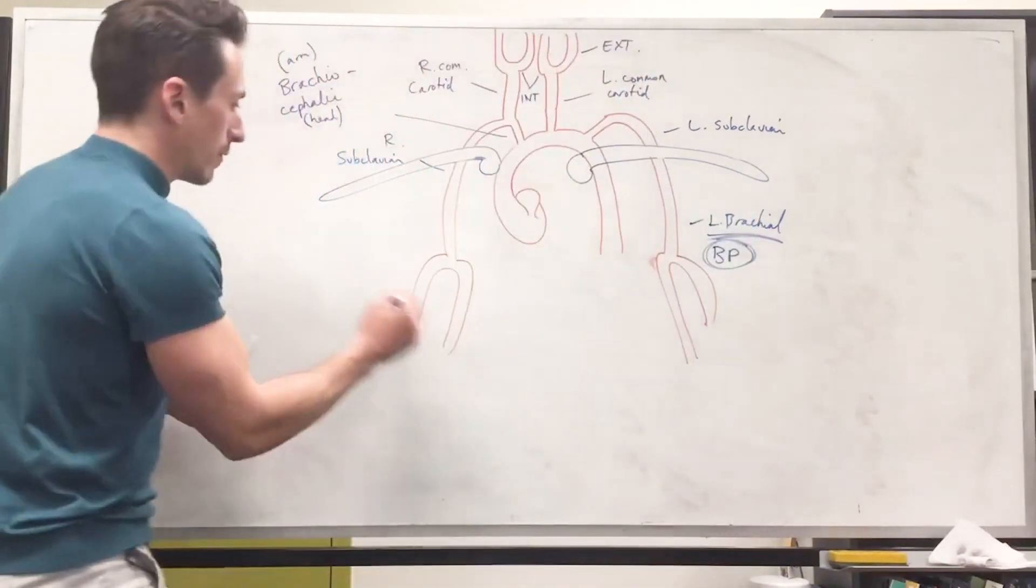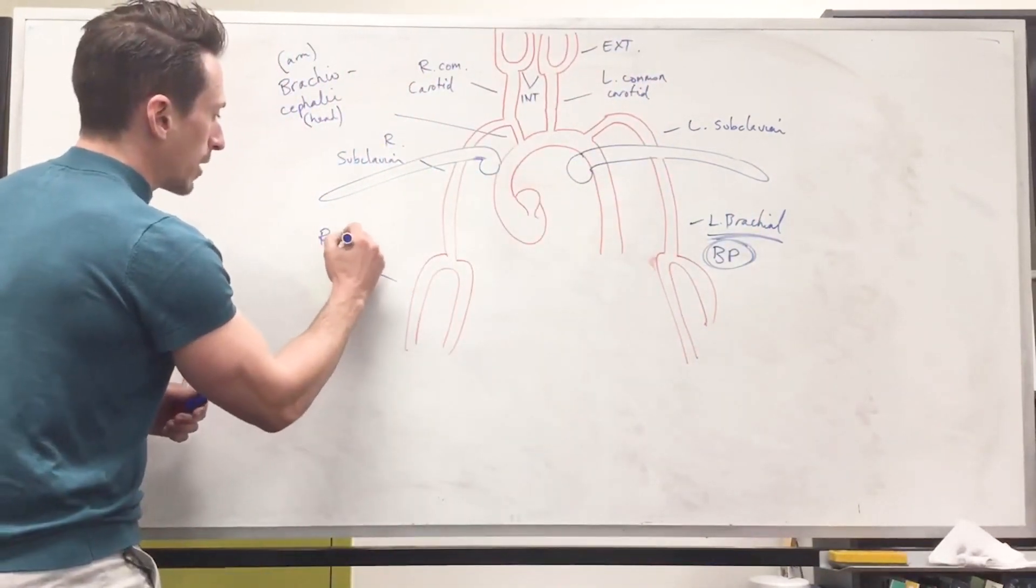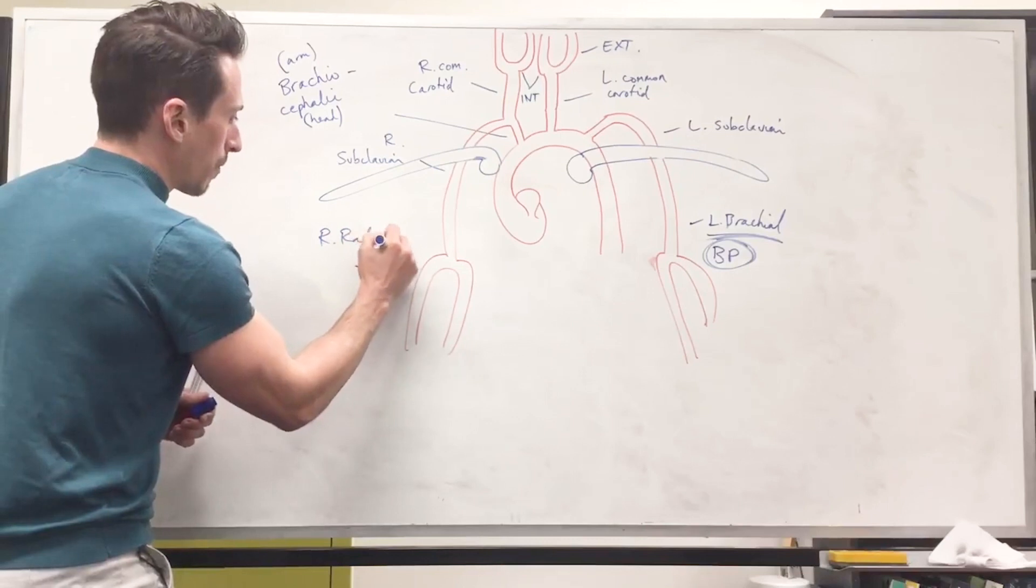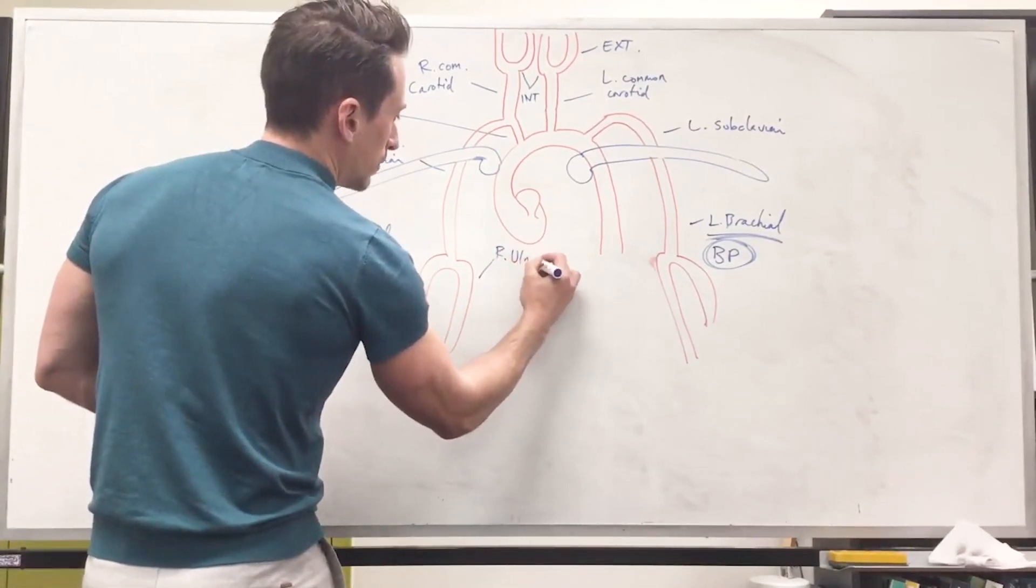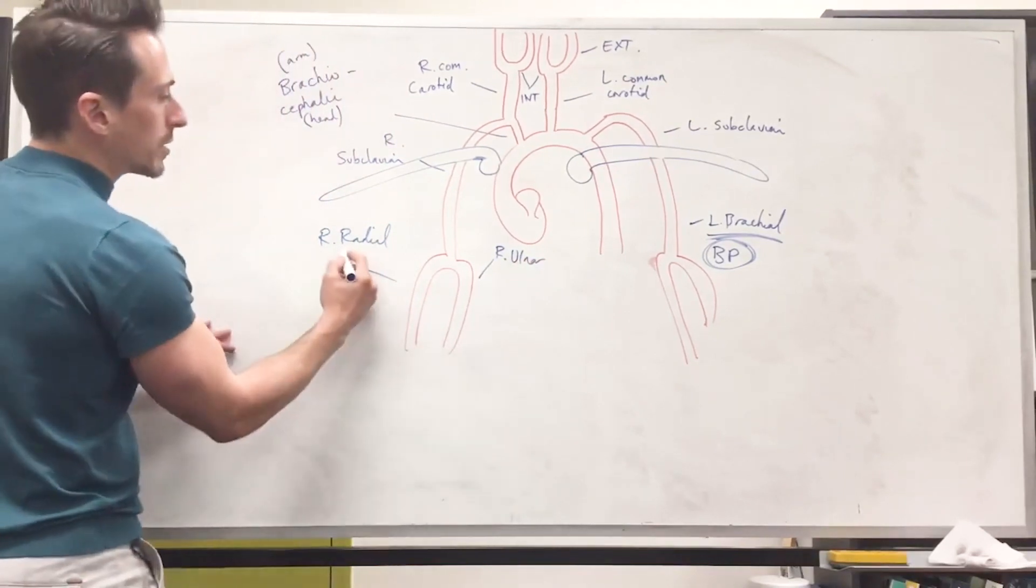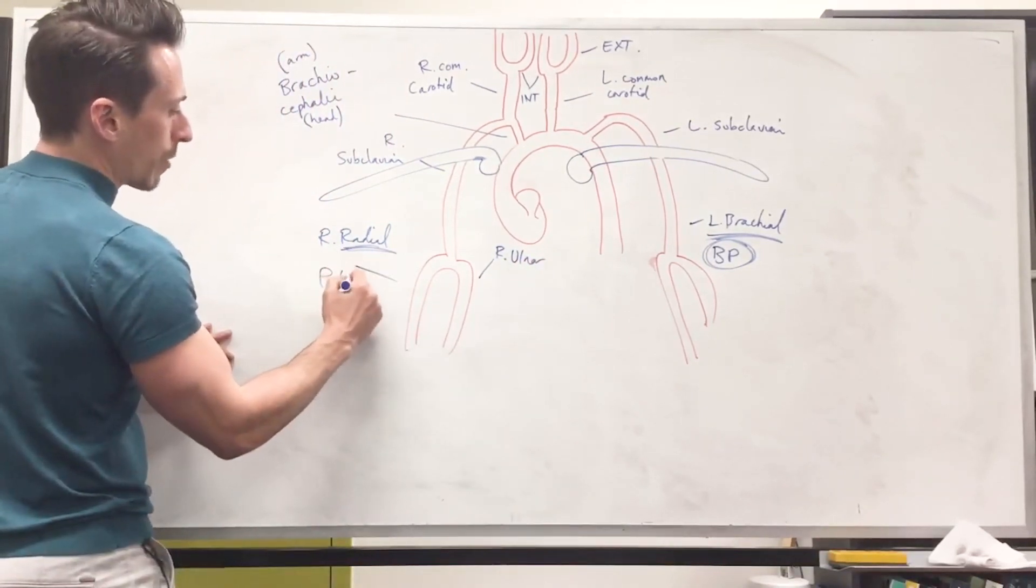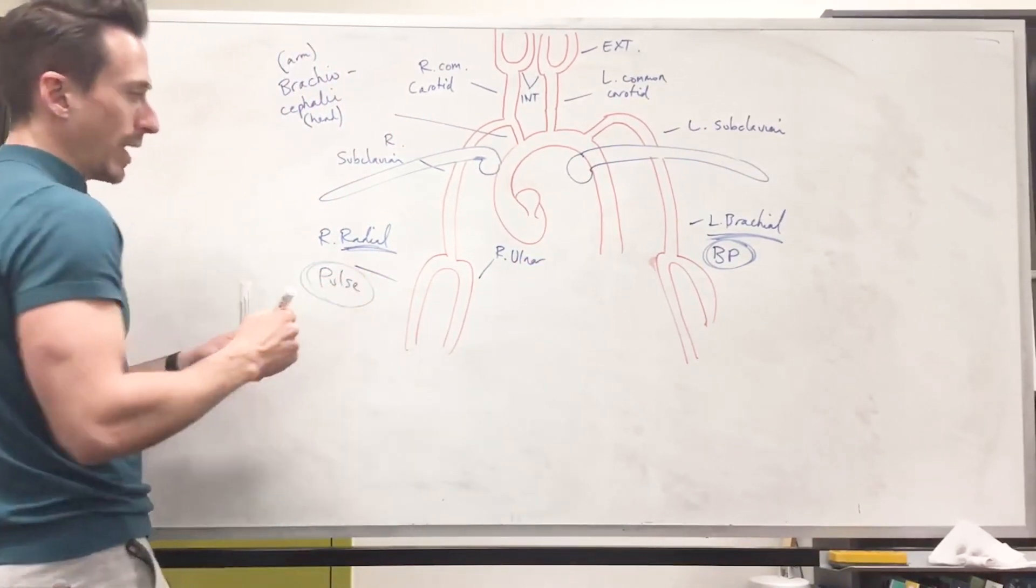So that means we have the radial artery here, right radial, and this is going to be right ulnar. Why is this important? Because you can take a pulse from the right radial commonly. It's quite easy to do.